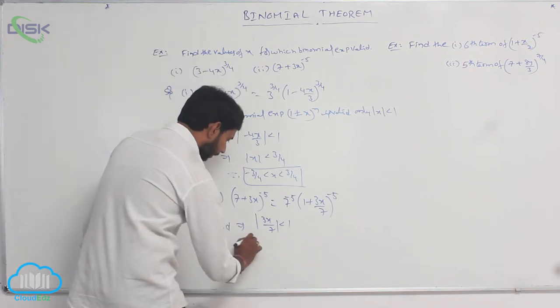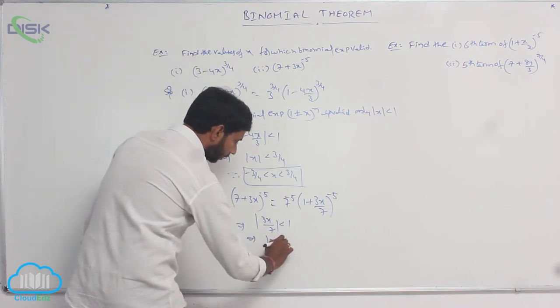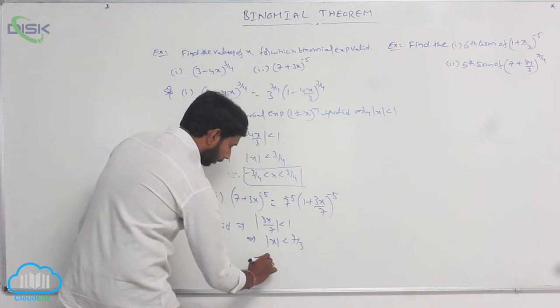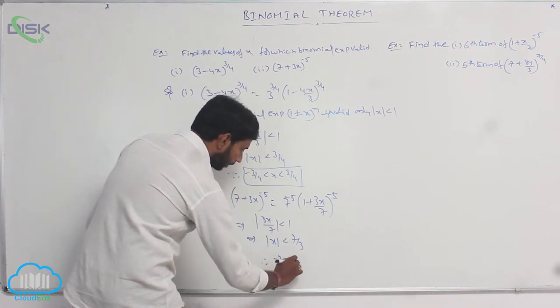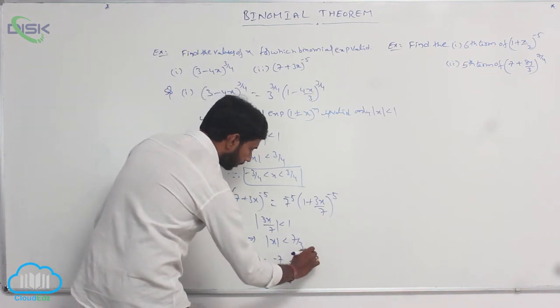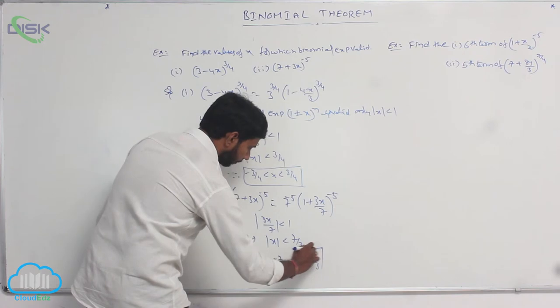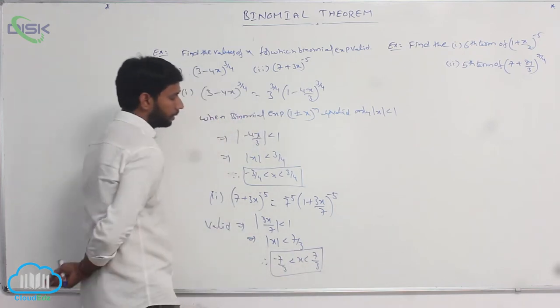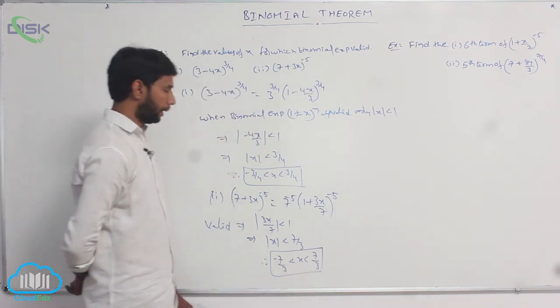That implies mod x is less than 7/3. Therefore, −7/3 < x < 7/3.